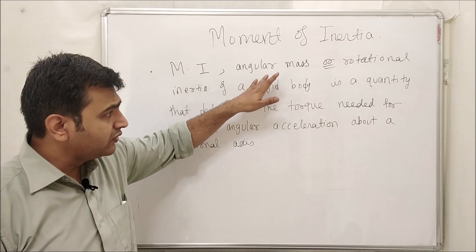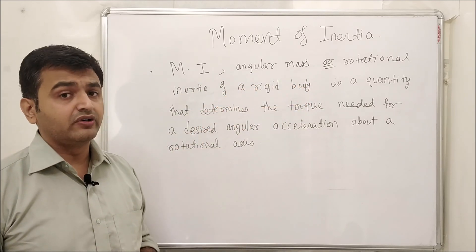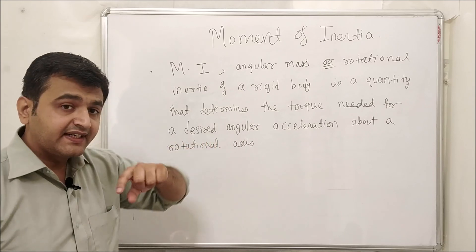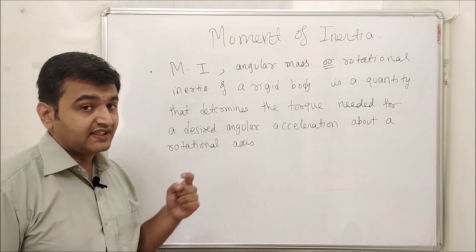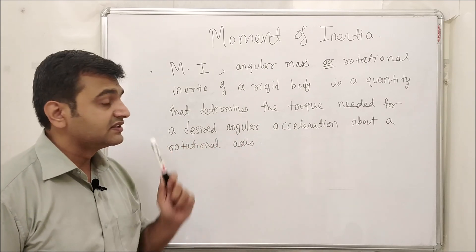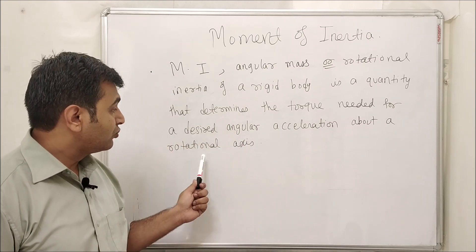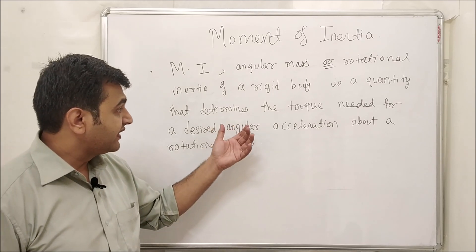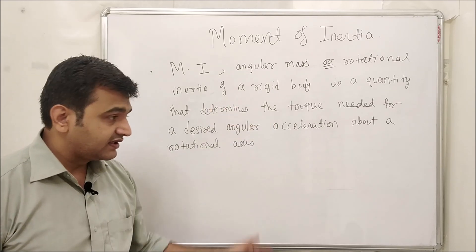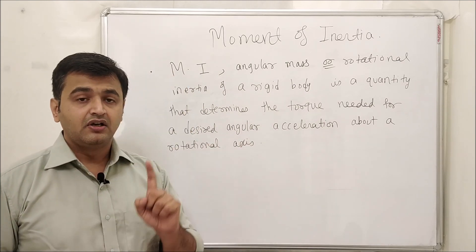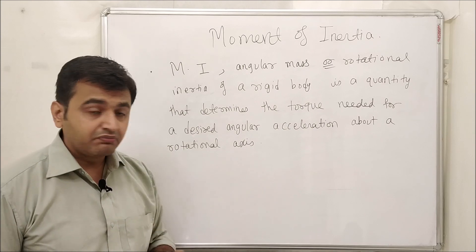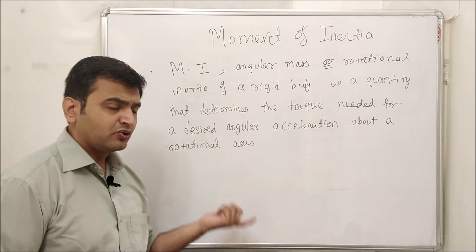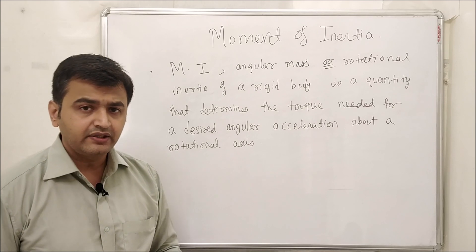Now let's move to moment of inertia — also called angular mass or rotational inertia of a rigid body. It is a quantity that determines how much torque is needed for a desired angular acceleration about a rotational axis. Center of mass relates to linear acceleration; moment of inertia relates to angular acceleration. In 2D we consider the x and y axes; in 3D the z-axis is included as well.